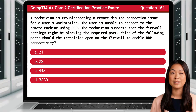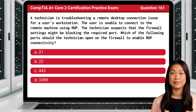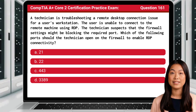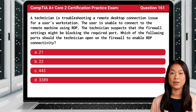Question 161. A technician is troubleshooting a remote desktop connection issue for a user's workstation. The user is unable to connect to the remote machine using RDP. The technician suspects that the firewall settings might be blocking the required port. Which of the following ports should the technician open on the firewall to enable RDP connectivity?